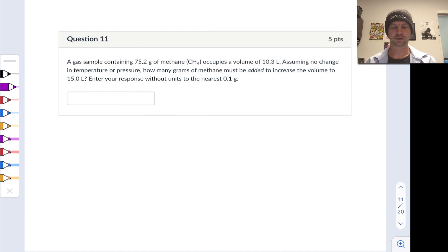This first question discusses a sample of methane with a mass of 75.2 grams. Methane is CH4 and we're told it occupies a volume of 10.3 liters. Assuming no change in temperature or pressure, let's underline that - this means temperature and pressure are constant.